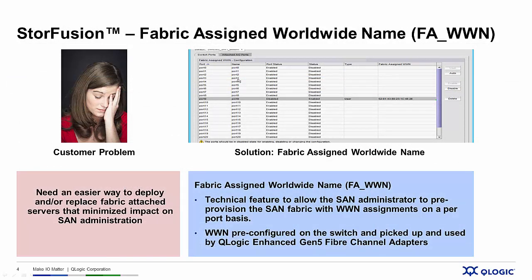Let's start by looking at the customer problem. Sarah is the manager of a small SAN administration team that's been tasked with adding a new storage area network as part of a data center expansion project. Her team is on top of things and have all the storage devices, the Brocade Gen5 16GB Fiber Channel switching in place, the cables, all their SFPs — they're ready to go. However, the servers with the Fiber Channel adapters installed in them have not yet arrived.